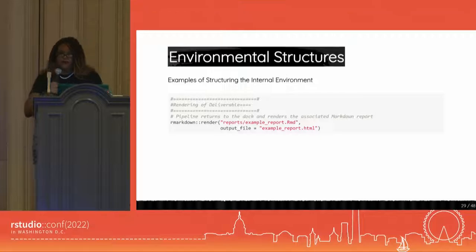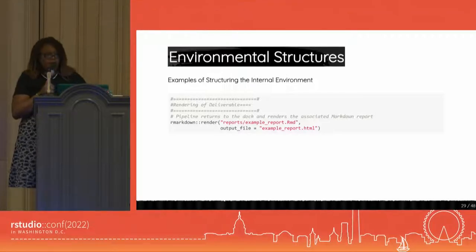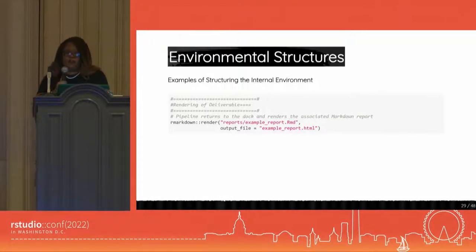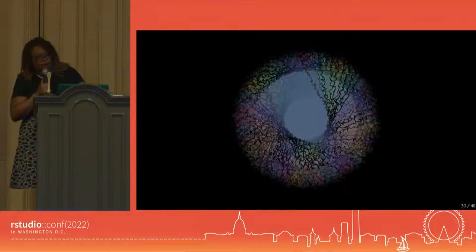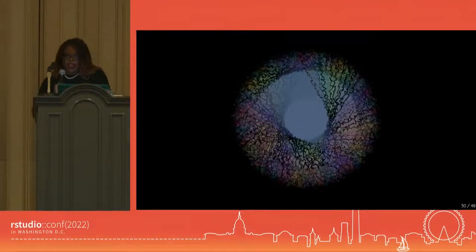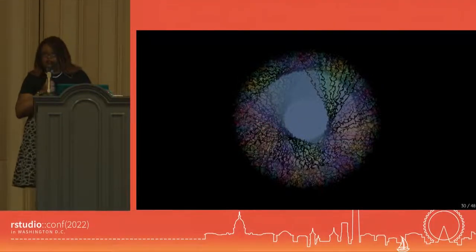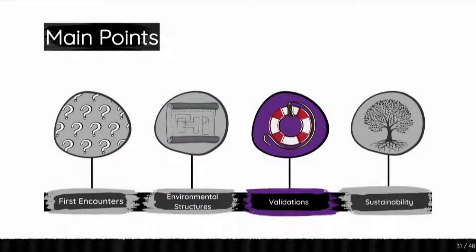Now that I've zoomed by that and realized I needed environmental structure, my data pipeline looks like this in my head. I still don't know what this is, and I hate that the lines are crooked like that. So what can I do to try to clear up the image of my mental data pipeline? Well, we can add data validations.